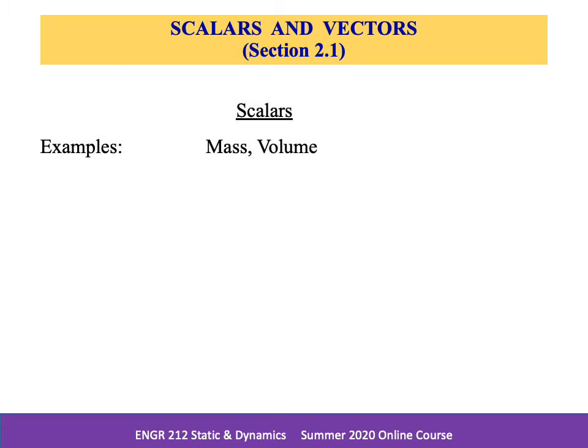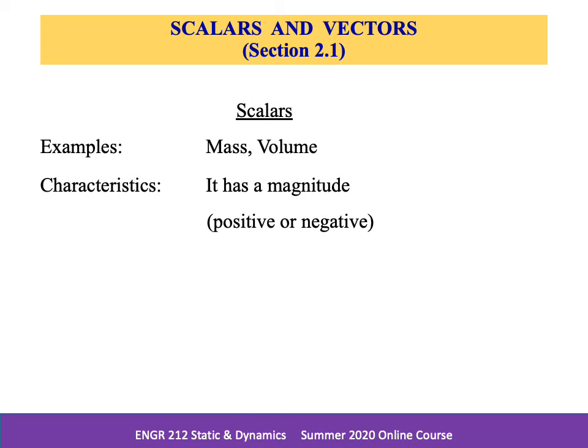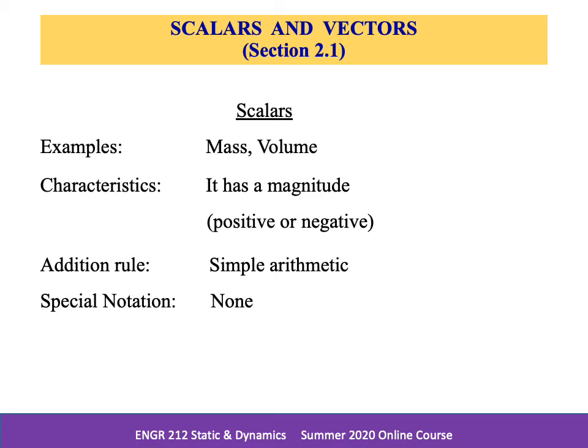Scalars, such as mass and volume, have simply a magnitude and are described solely by that magnitude. They can be either positive or negative, and we can simply add them together.